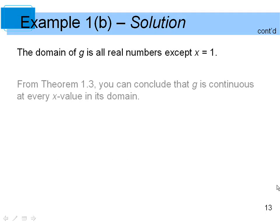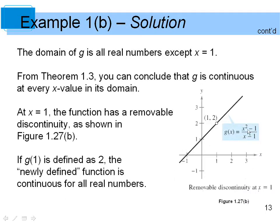Example two: f(x) = (x² - 1)/(x - 1). The denominator equals zero when x = 1, so there's a gap there — it's not defined. But this is a removable discontinuity: using the dividing-out technique, we can factor to get a simplified expression. The function is continuous at every x value in its domain, and at x = 1 there's just a removable discontinuity. If g(1) is defined as 2, the newly defined function is continuous for all real numbers.